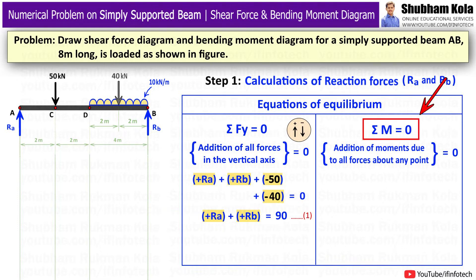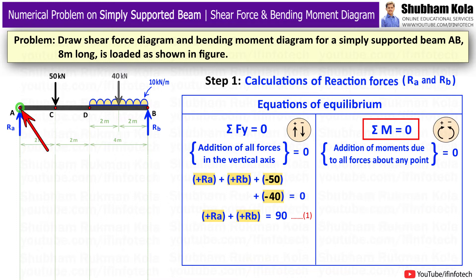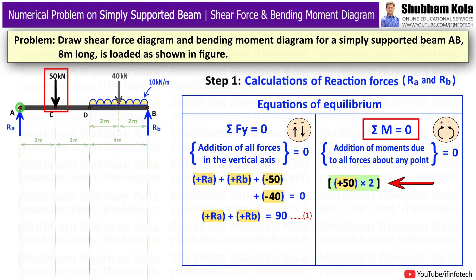The second equation is summation of moments equal to 0. I can take moments at point A or point B. My sign convention is clockwise moment as positive and anticlockwise moment as negative. Taking moments at point A: the 50 kN force pushes the beam downward, rotating it clockwise, so it is positive — plus 50 kN multiplied by 2m distance from the fixed point. The converted point load of 40 kN also acts downward, rotating clockwise — plus 40 kN multiplied by 6m distance from the fixed point.